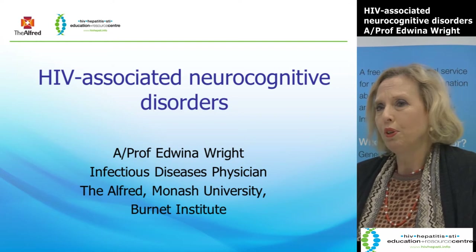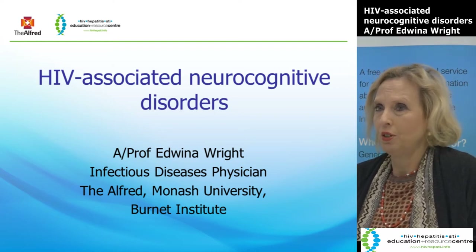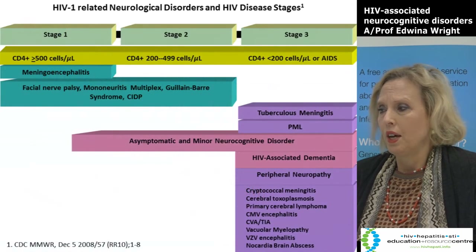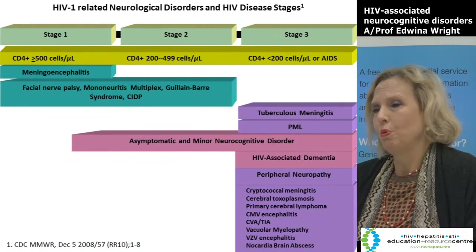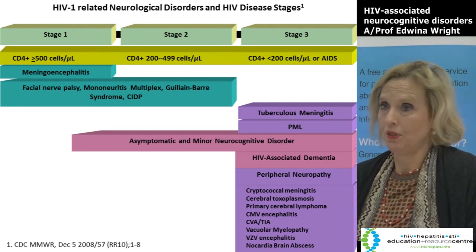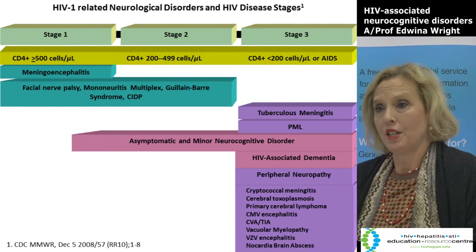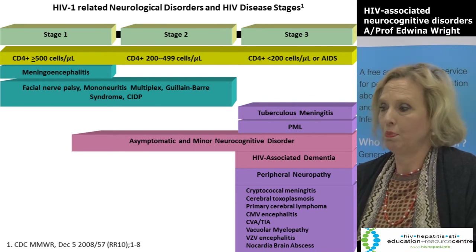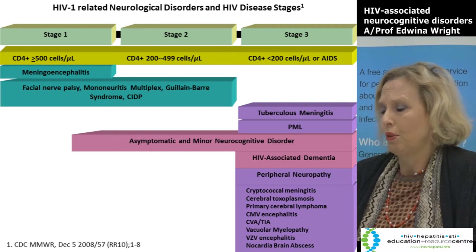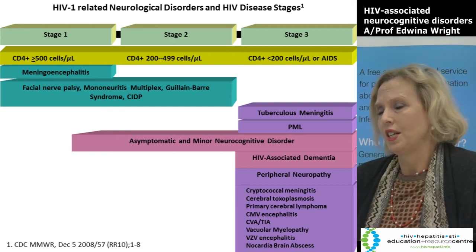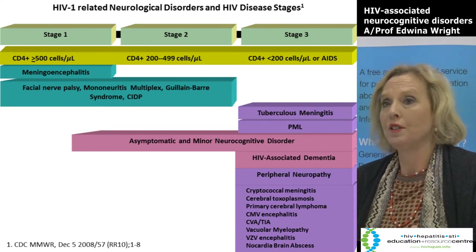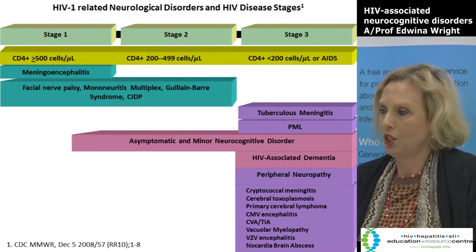To put HAND or HIV associated neurocognitive disorders in perspective, what I have on this slide is a schematic showing what sort of neurological problems people may have when they become HIV infected, and at which stage they develop different neurological problems. Stages 1, 2 and 3 are the stages that the CDC in the United States uses to denote the different clinical stages of HIV.